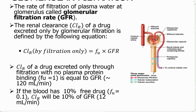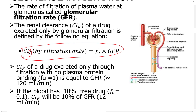Here we'll see drug excretion by filtration. This is the equation we'll be using. This shows renal clearance — CLR — but it is only by filtration. In this case you have to take the fraction of unbound drug (fu) and the glomerular filtration rate (GFR). GFR is usually 120 milliliters per minute.